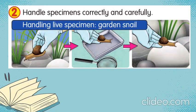The teacher will explain how to do the experiment and how to handle science apparatus and substances. Number 2: handle specimens correctly and carefully. You may ask, what is a specimen? A specimen means a living thing. For example, in this case we are talking about a garden snail, so the garden snail is the specimen. In other experiments we may use a spider or a grasshopper — we call them specimens.